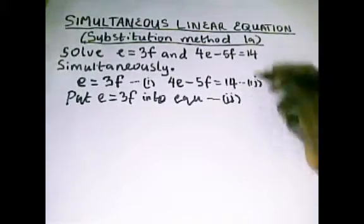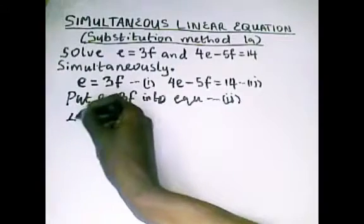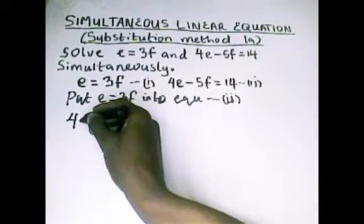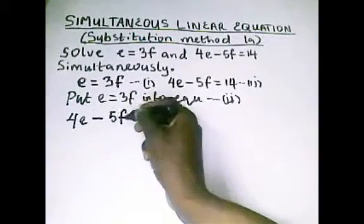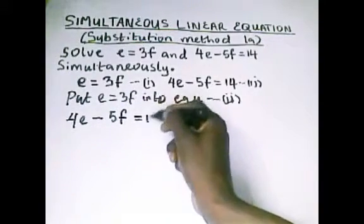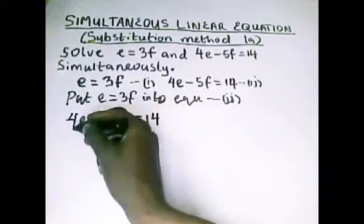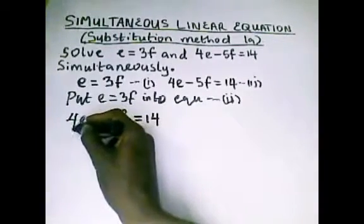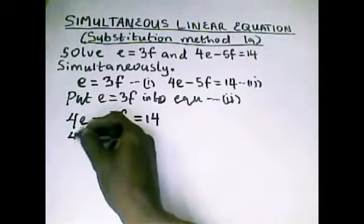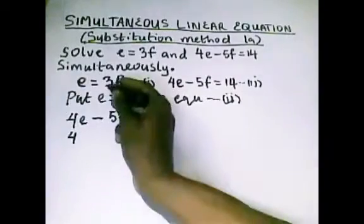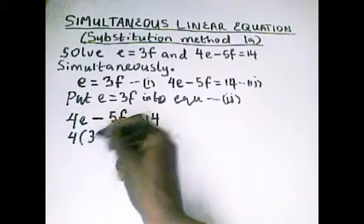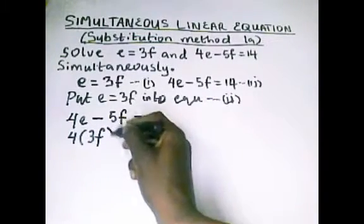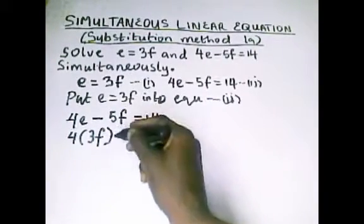In equation 2, we are going to have 4e minus 5f equals 14. Now we do the substitution here in the next level. We say 4, now e equals what? 3f. So instead of writing the e, we introduce the bracket and we put our 3f, close the brackets.